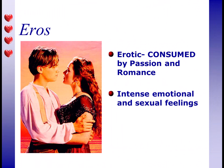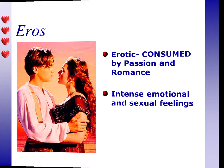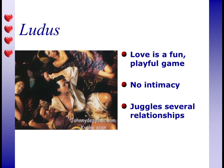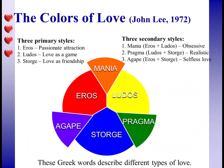Eros, ludus, and storge are the three primary concepts. Eros is a type of love characterized by intense emotional and sexual feelings — the erotic lover is consumed by passion and romance. We might contrast eros with ludus, the kind of love characterized by fun and playfulness. The ludic lover might juggle several relationships at one time — what you might call a player in modern vernacular. Intimacy, getting to know someone personally and emotionally, is not part of the ludic experience.